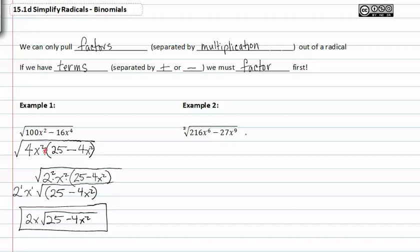In example two we must do the same thing again. We look at the two terms within the cubed root and ask ourselves what's the common factors. In this case 27x⁶ is the common factor.